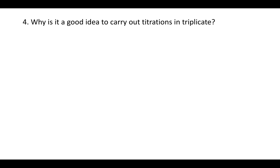Question 4 asks: why is it a good idea to carry out titrations in triplicate? This is really to get a more accurate or more precise result. If you repeat an experiment twice you get two data points and can draw a line, but if you repeat it three times, you get a trend and a sense of how much deviation there is from that trend. So carrying out titrations in triplicate gives you a sense both of a trend and of the experimental error in finding that trend.